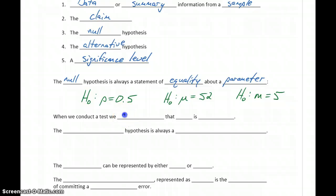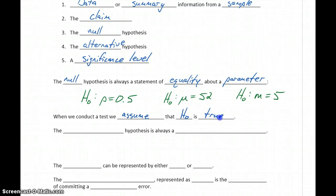Whenever we conduct a hypothesis test, one of our starting assumptions is that the null hypothesis is true. So we're always assuming that H₀ or H naught is a true statement.